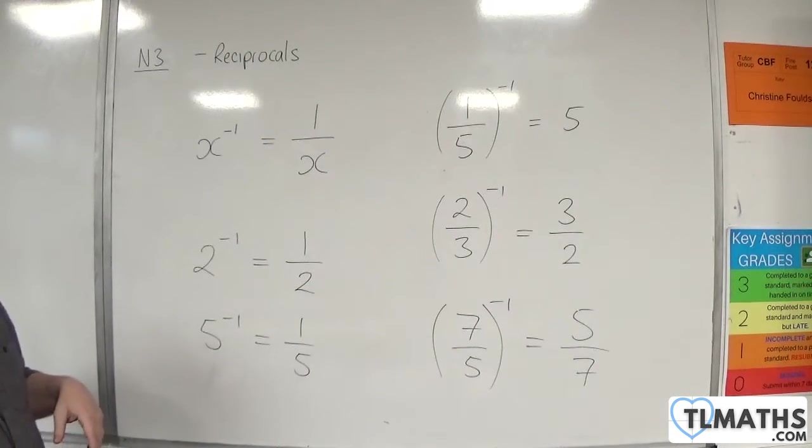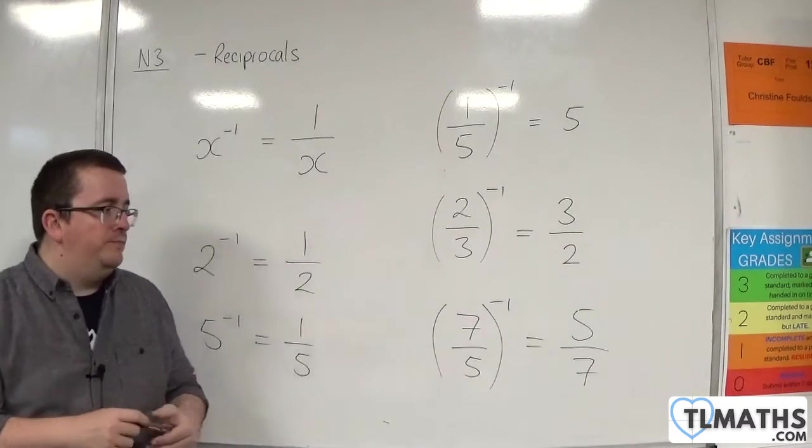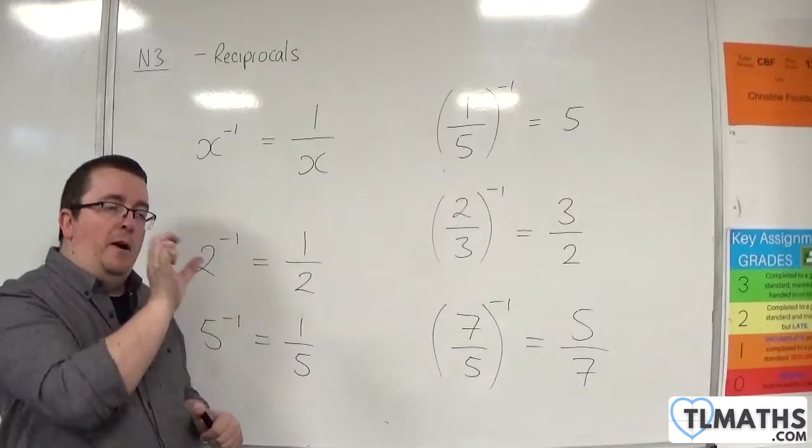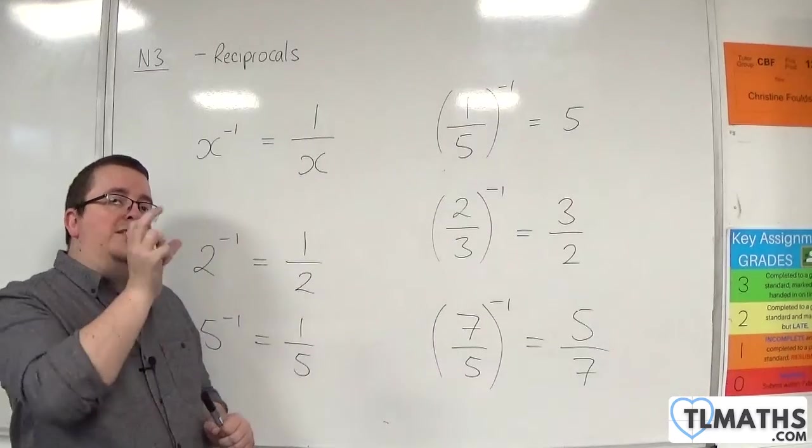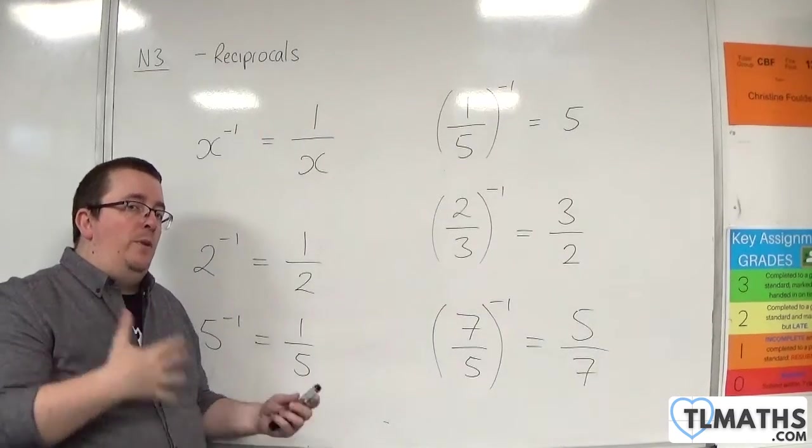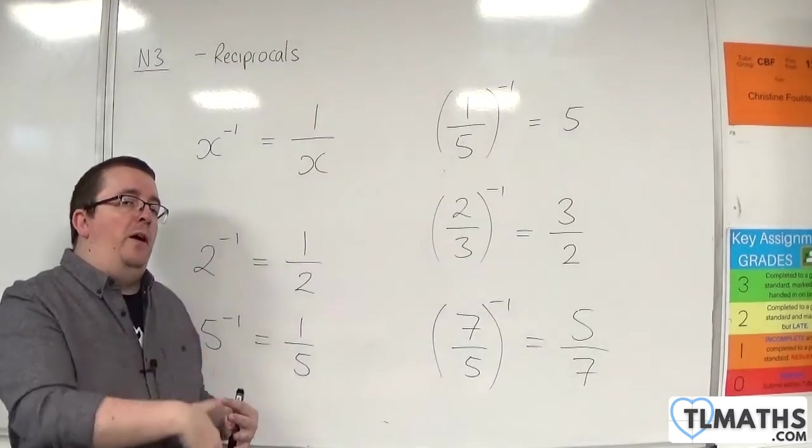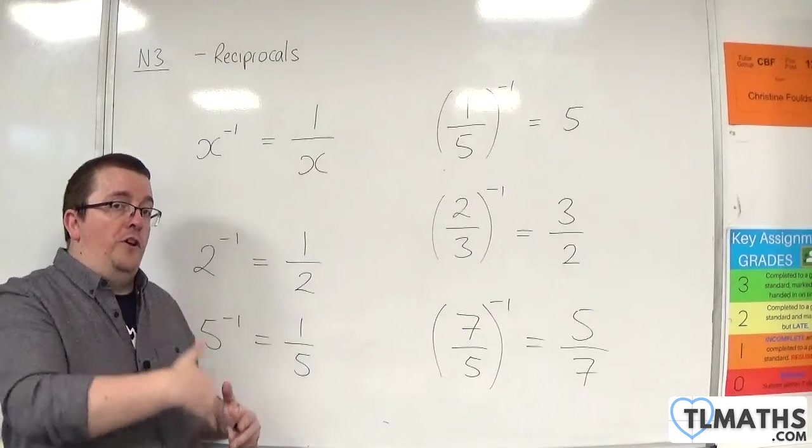Because finding the reciprocal is, and that minus 1 is the exponent, that gets grouped together when you're dealing with powers and roots as part of the order of operations.